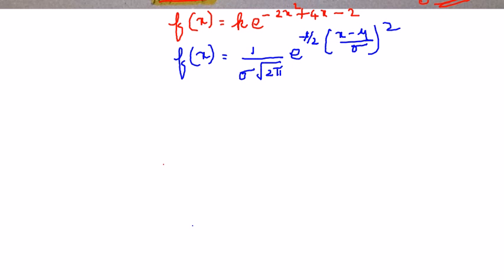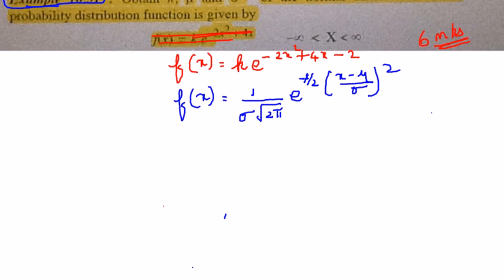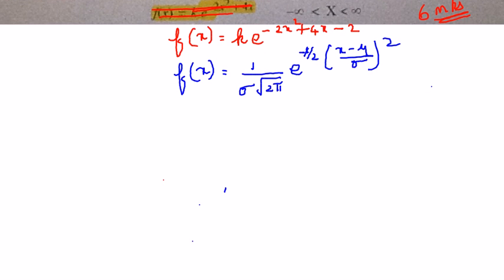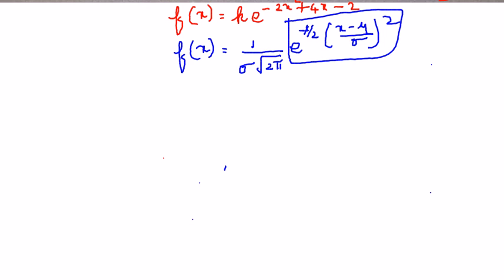As in example 10.31, if this is the first time you are seeing this video I would suggest please see the example 10.31 video before you do this sum, because this sum is not in your textbook but it is asked as an outside question in one of the question papers. You now have to bring e^(-2x² + 4x - 2) into the form e^(−½·((x−ν)/σ)²). Let's take the power alone.